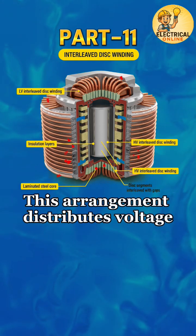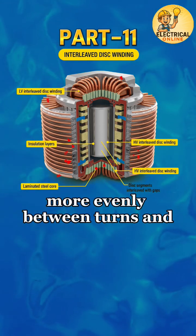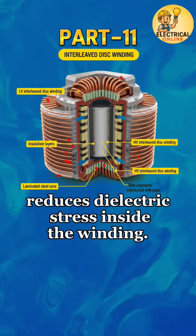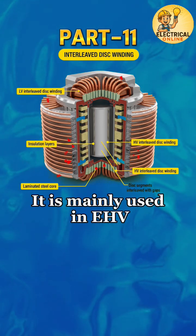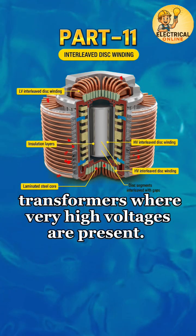This arrangement distributes voltage more evenly between turns and reduces dielectric stress inside the winding. It is mainly used in EHV transformers where very high voltages are present.